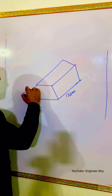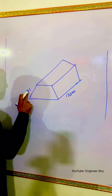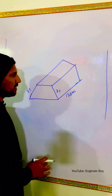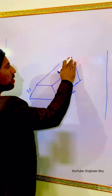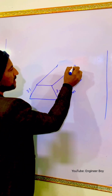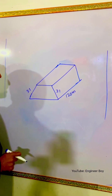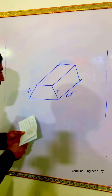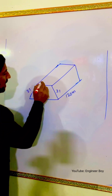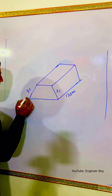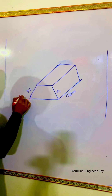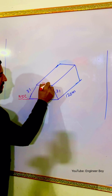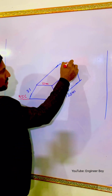The side slopes are 3:1 on both sides. The formation width is 10 meters. Embankment means just filling - maybe a bank for a road or for a railway, it does not matter.